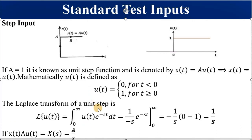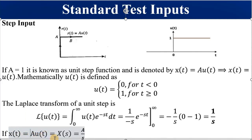You must be able to find the Laplace transform of a unit step signal. The Laplace transform is the integral from zero to infinity of U(t) multiplied by e^(−st) dt, which equals 1/(−s) · e^(−st) evaluated from 0 to infinity. Substituting t by infinity and zero gives 1/s. If x(t) = A·U(t), its Laplace transform equals A/s. If A = 1, the step input is known as a unit step function, denoted U(t), where U(t) = 0 for t < 0 and U(t) = 1 for t ≥ 0.